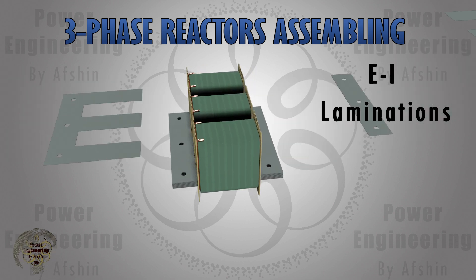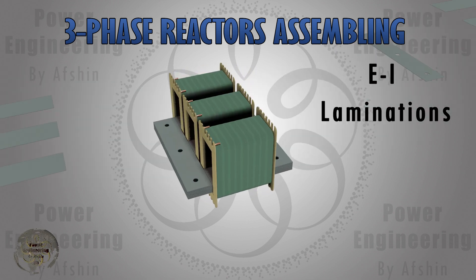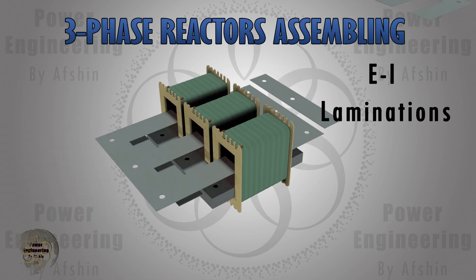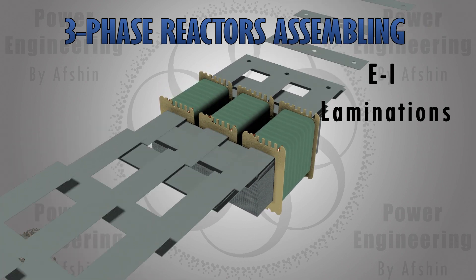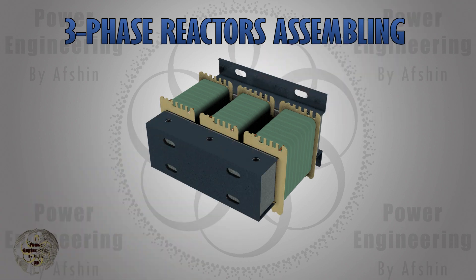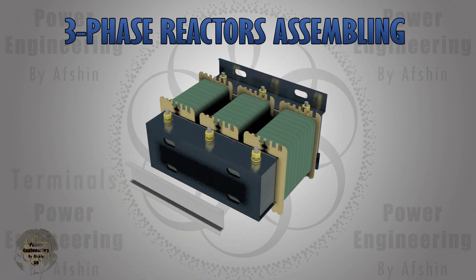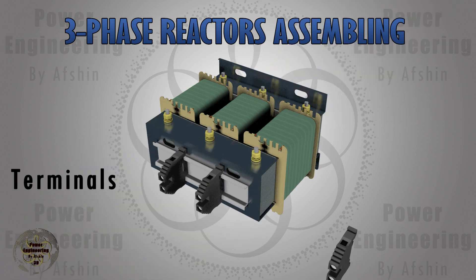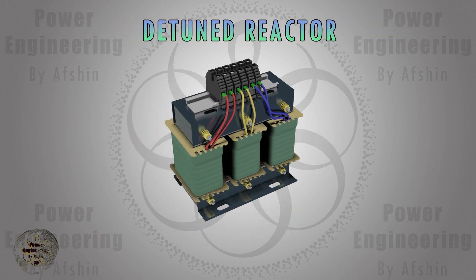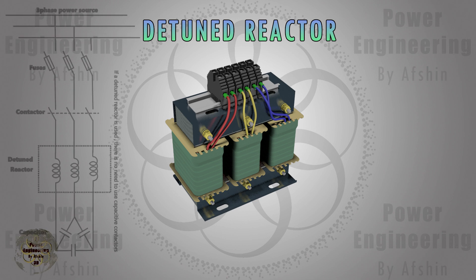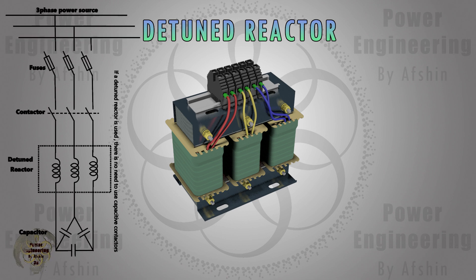While observing the assembly process, you will receive brief explanations of each filter type. We will start with an introduction to the detuned reactor. A detuned reactor is a specialized type of inductor used in power factor correction (PFC) systems, particularly in conjunction with capacitor banks. Its primary purpose is to avoid resonance conditions that can occur when capacitor banks are installed in electrical systems with significant harmonic distortion.